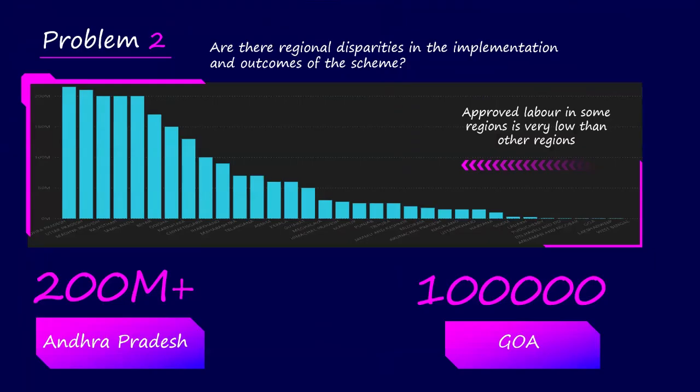Is there any regional disparity in the implementation and outcomes of the scheme? The bar chart shows that approved labor in some regions is very low compared to other regions. For example, in Andhra Pradesh there are 200 million approved labor, while in Goa there is only 1 million approved labor.